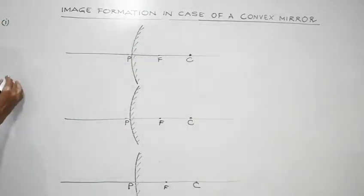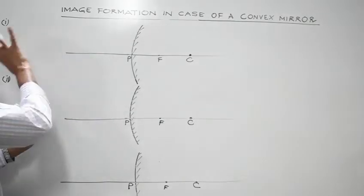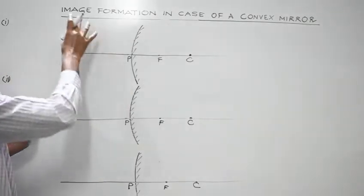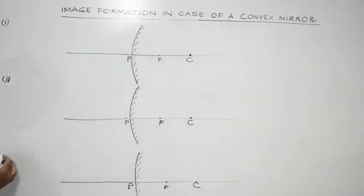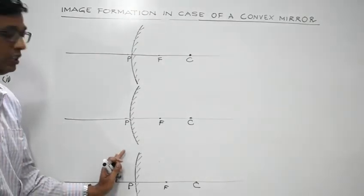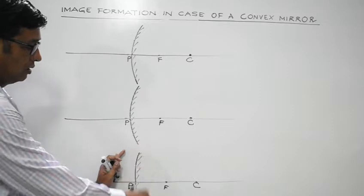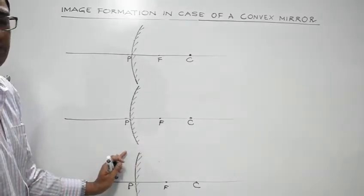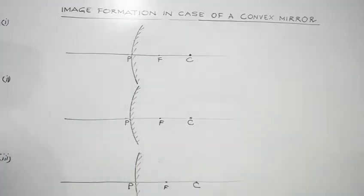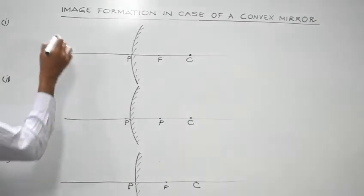In case 2, the object will be placed much closer — not at infinity. And in case 3, the object will be placed very close to the convex mirror. Let's begin with the first scenario: object placed at infinity.